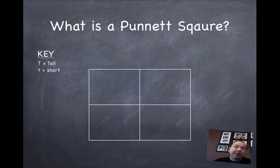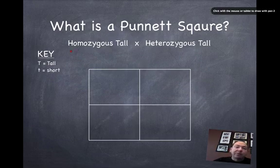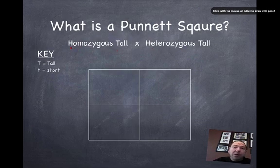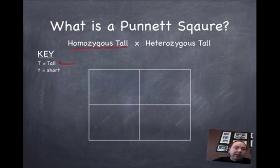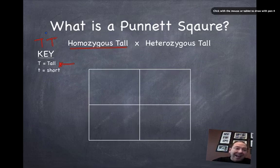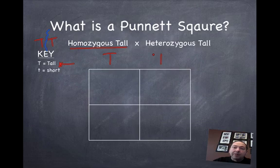Let's say we have a key where we're going to use big T equals tall and little t equals short, and we want to cross two parents — a parent that is homozygous tall, let's say for plants, and another one that is heterozygous tall. Homozygous tall means that the letters are the same, so the genotype is going to be big T, big T. But during meiosis, those alleles are going to be split in half, and we're going to represent that across the top by writing a big T in each column.